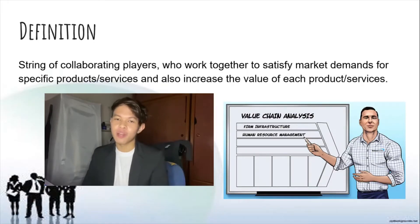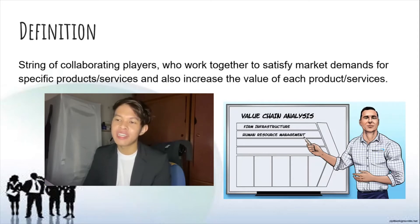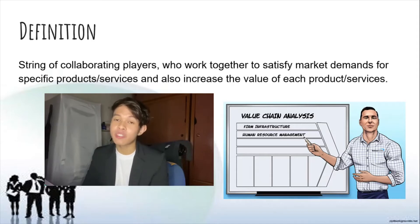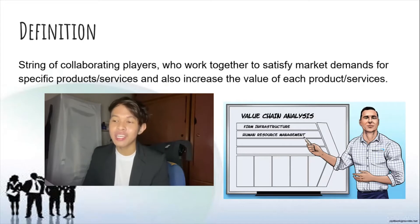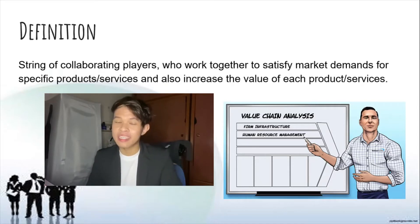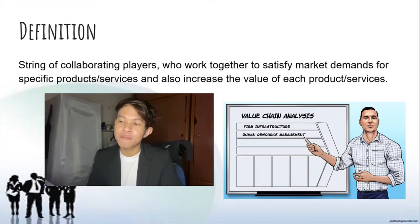For the next part, we proceed with the definition of value chain analysis. The value chain analysis is a string of collaborating players who work together to satisfy market demands for a specific product or services and also increase the value of each of those products or services. Value chain analysis is also defined as one of the strategic management accounting tools providing information to support the strategic decisions of an organisation. Strategic decisions usually involve long-term planning and have a significant impact on the organisation. Although they are mainly internal elements, there are also some external elements involved.